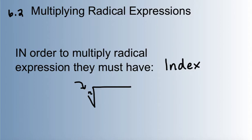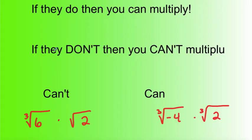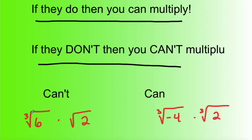So if they don't have the same index, you can't multiply them. So here's some examples. If they do have the same index, you can multiply, but if they don't, you can't. So here's a good example: the cubed root of 6 times the square root of 2. They have different indexes, so you can't multiply them. You'd have to leave them in that form.